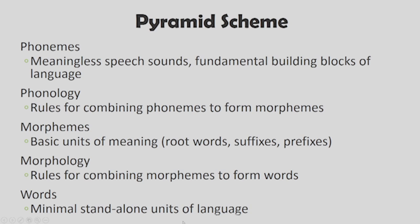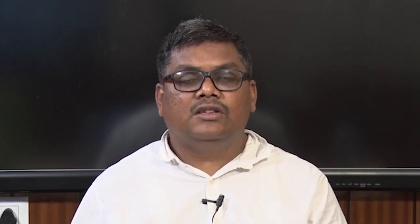The building blocks of human languages are called phonemes or phones. Phones are the basic speech sounds in the English language — for example, sounds like 'ba', 'aa', 'da'. Phonemes are the meaningless speech sounds which are the fundamental building blocks of any language. These are the sounds produced by the vocal cords, and as we will see in upcoming lectures on speech production, we will see how these phones are produced. If you look at a dictionary and see the pronunciation of any word, it is written in terms of phones.